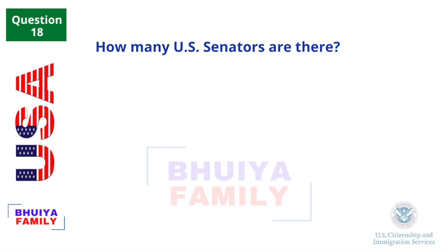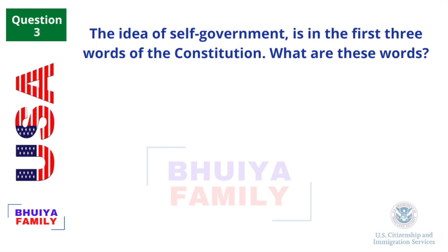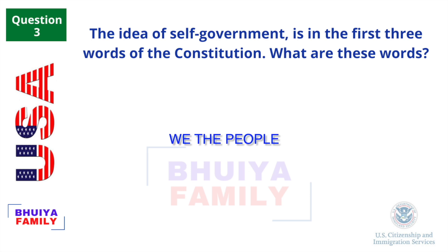How many U.S. Senators are there? 100. The idea of self-government is in the first three words of the Constitution. What are these words? We the people.